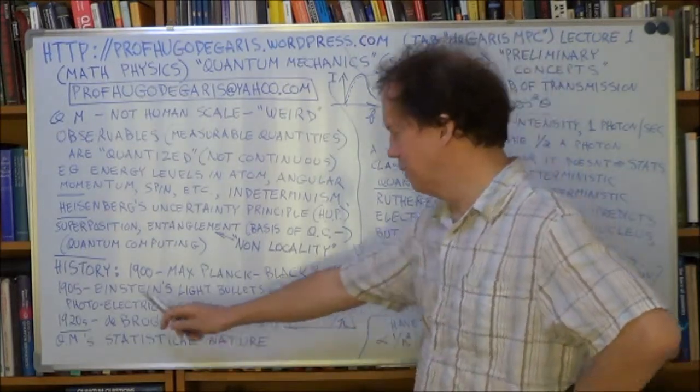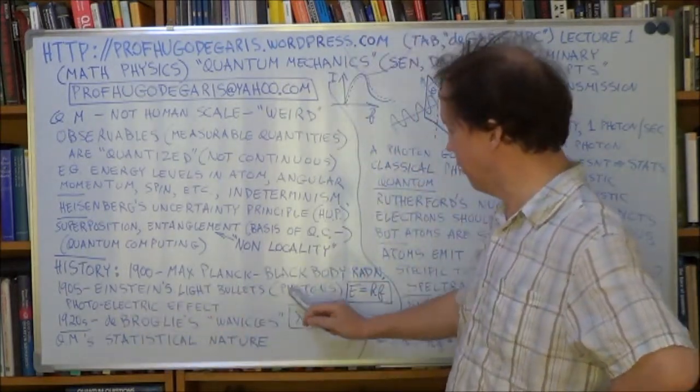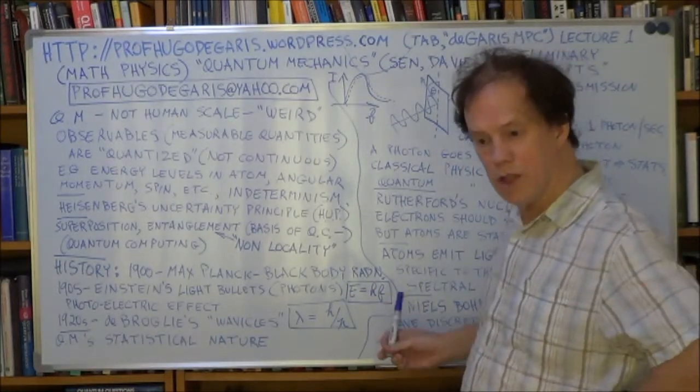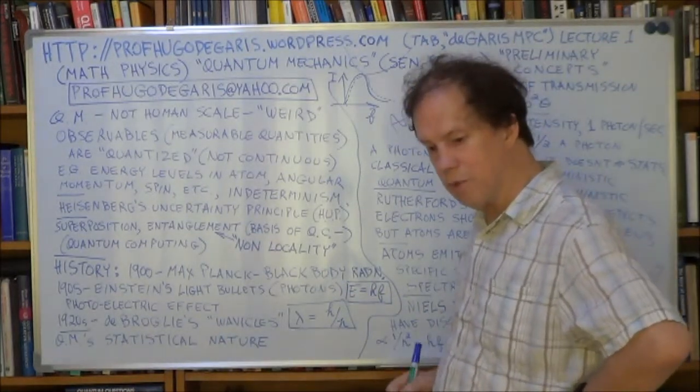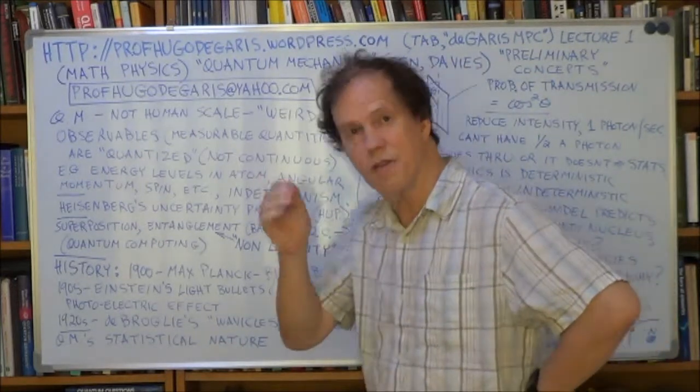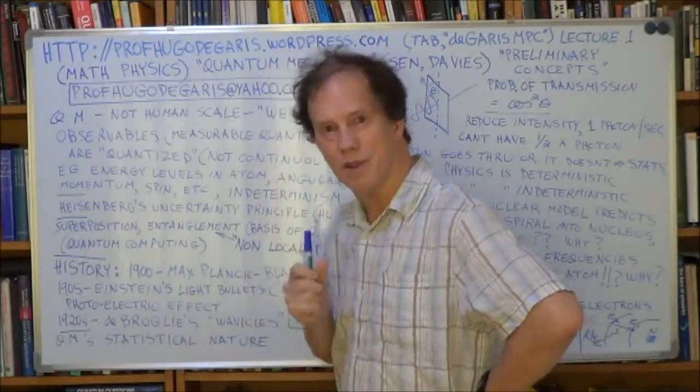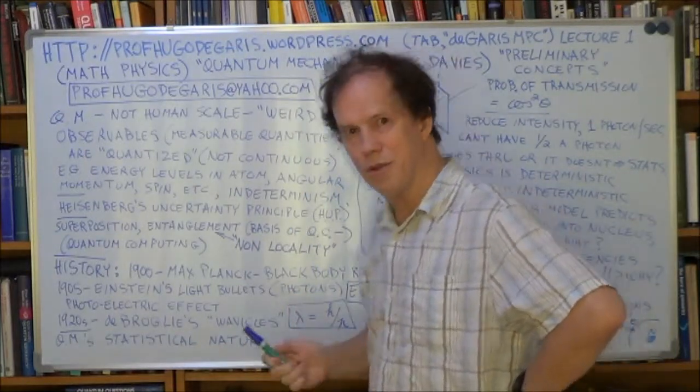So, Einstein's light bullets, or photons, and Einstein came out of the famous formula, and eventually he got the Nobel Prize for this, not for his relativity. That was too radical for a lot of physicists. They couldn't accept it.